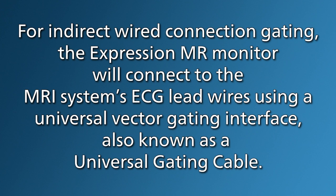For indirect wired connection gating, the Expression MR monitor will connect to the MRI system's ECG lead wires using a universal vector gating interface, also known as a universal gating cable.